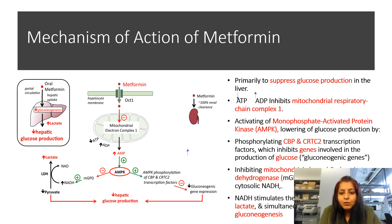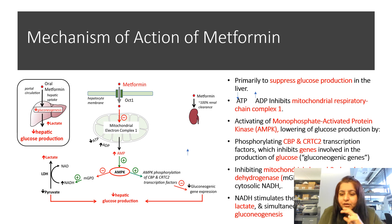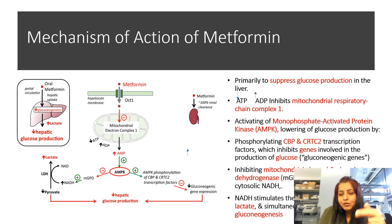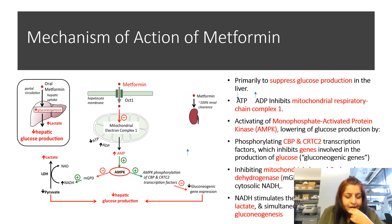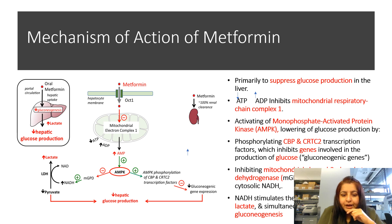AMP kinase inhibits glucose production by two pathways. In the first pathway, it activates transcription factors that go into the nucleus and bind with receptors responsible for gluconeogenesis, inhibiting them. In the second pathway, AMP kinase inhibits AMPD, and by inhibiting this, it increases NADH. When NADH increases in the cell, there is higher conversion of pyruvate into lactate.